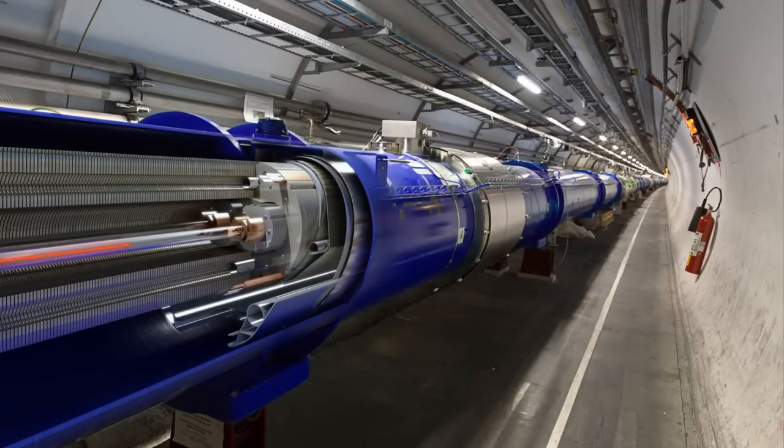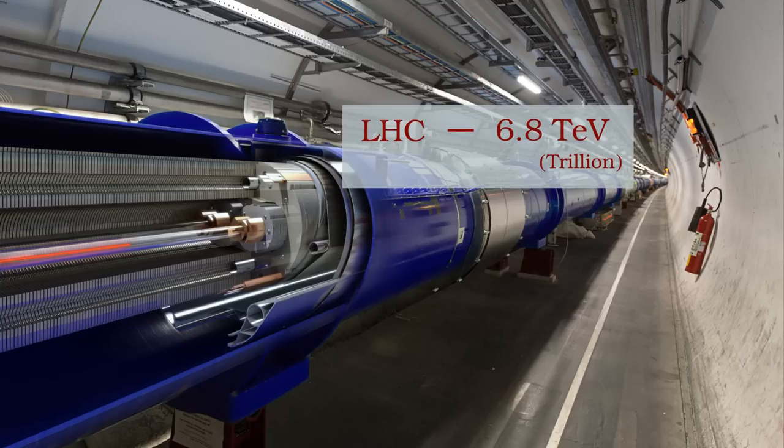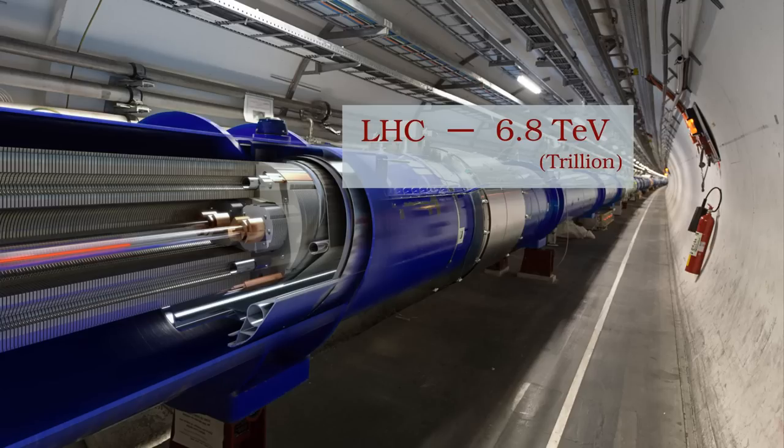One place where a large amount of energy, and therefore momentum, is imparted onto matter is a particle accelerator. A big machine, such as the Large Hadron Collider at CERN, can impart 6.8 trillion electron volts of energy onto a proton, which corresponds to a huge amount of momentum.